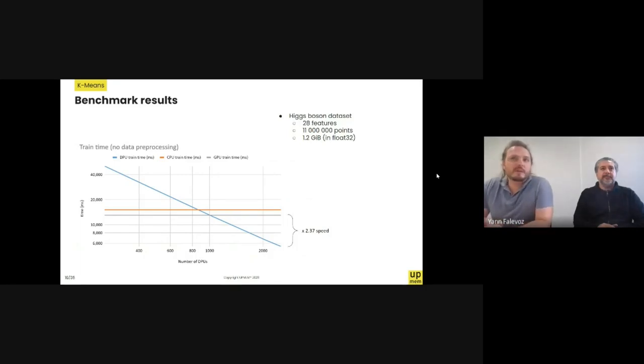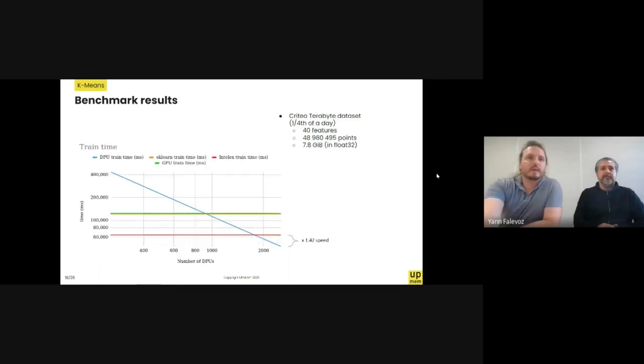Now, in terms of performance, the first benchmark we did was on the often used X-Boson dataset. It's very convenient because it's a tabular dataset. And it's not very big. It's a medium-sized dataset, just 1.2 gigabytes. And so here in orange, you've got the training time for k-means on CPU, in gray on GPU. And then the blue line is the DPU training time as you increase the number of available DPUs up to the maximum of 2,500 approximately on a server. And then using a full server, we get a 2.37 acceleration compared to GPUs.